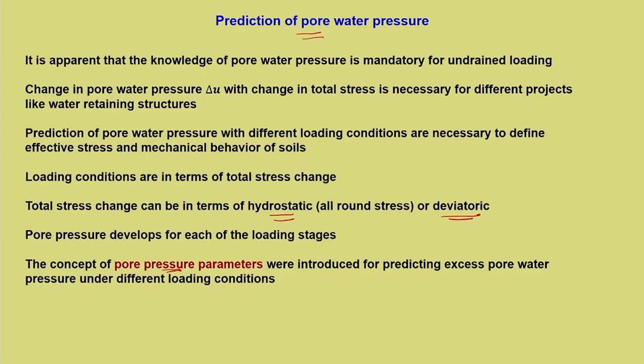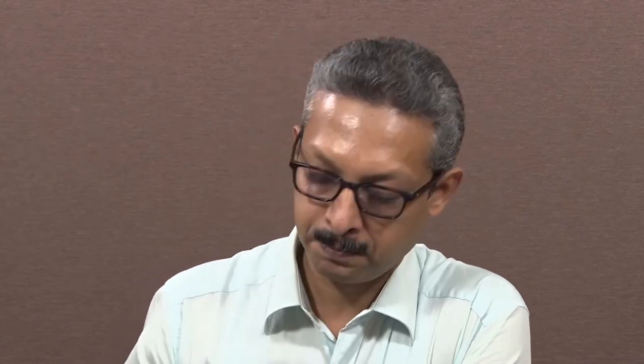Having established that pore water pressure parameters are important, let us see Skempton's pore pressure parameters A and B, defined in an age-old paper published in Geotechnique in 1954. Over all these periods, this still remains a fundamental aspect in many soil mechanics problems. It is important for us to know the genesis of where it all started — Skempton's pore pressure parameters A and B are very important, and there are different variants, but the concept remains the same.